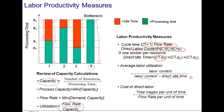Finally, we define the cost of direct labor as a ratio between the total wages per unit of time. For example, four workers times the hourly wage rate divided by the flow rate per unit of time.